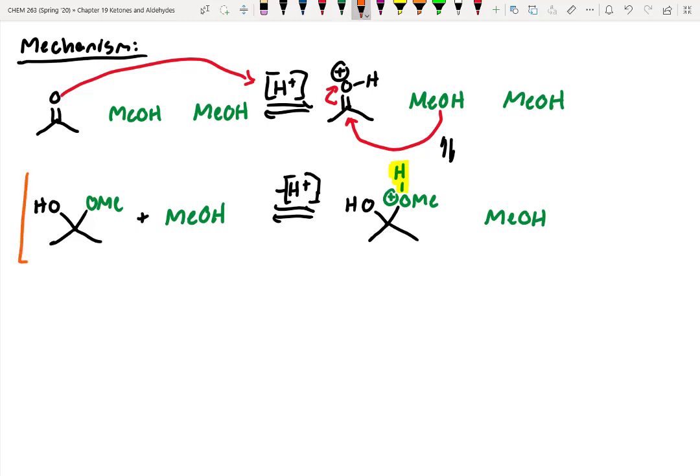Alright, at this point, this intermediate right here is called a hemi-ketal. Meaning one equivalent of our alcohol has added in, but not both. So it's halfway done.